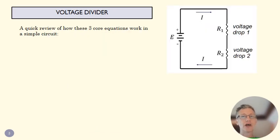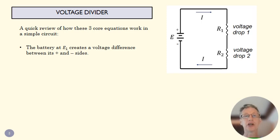So how do those core equations work in this simple circuit here? Well, in this circuit, we've got a power source, some sort of battery or other DC power source with a positive voltage and a negative voltage. And so remember, voltage is about potential.